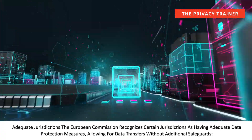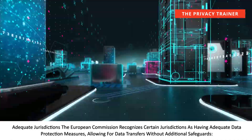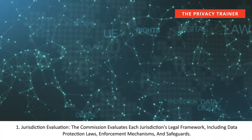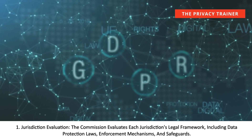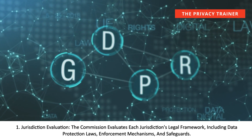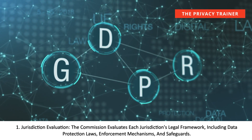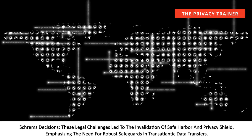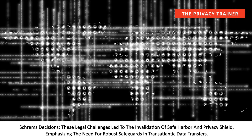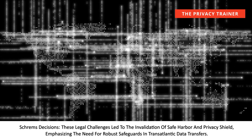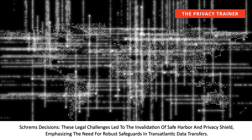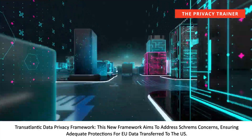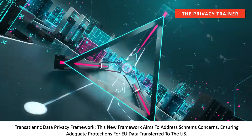The European Commission recognizes certain jurisdictions as having adequate data protection measures, allowing for data transfers without additional safeguards. The Commission evaluates each jurisdiction's legal framework, including data protection laws, enforcement mechanisms, and safeguards. Regarding Safe Harbor, Privacy Shield, and the Transatlantic Data Privacy Framework, legal challenges led to the invalidation of Safe Harbor and Privacy Shield, emphasizing the need for robust safeguards in transatlantic data transfers. The new Transatlantic Data Privacy Framework aims to address those concerns, ensuring adequate protections for EU data transferred to the US.